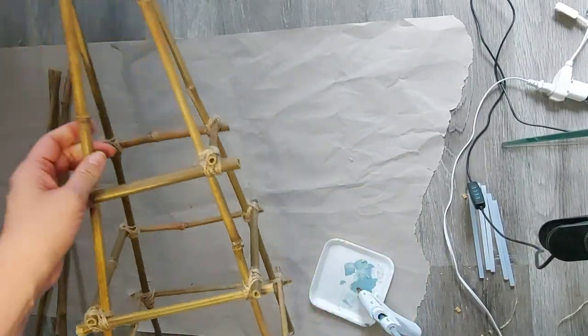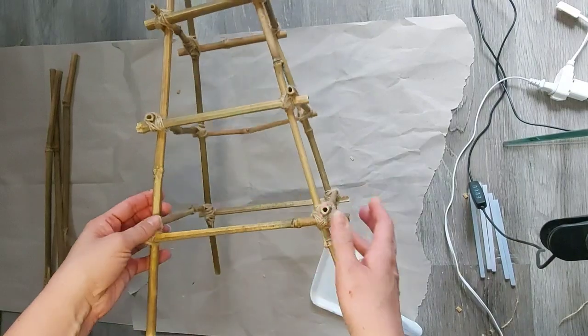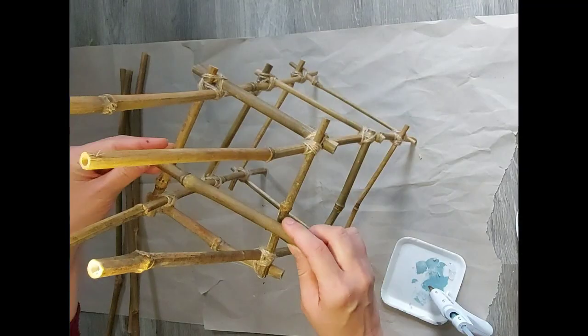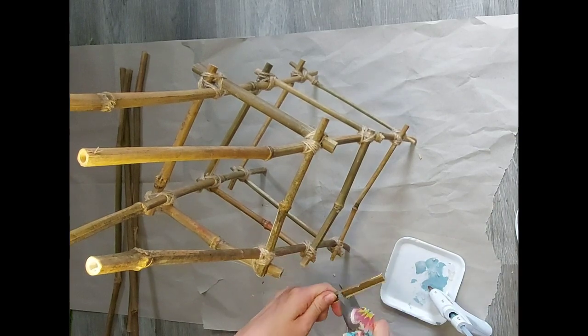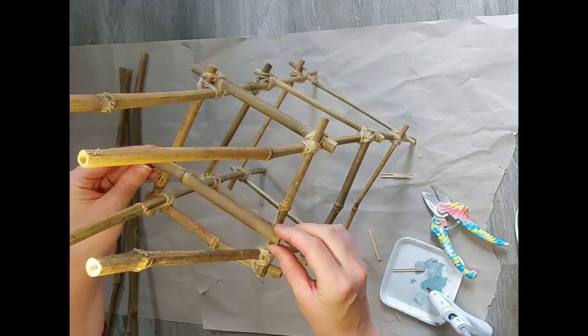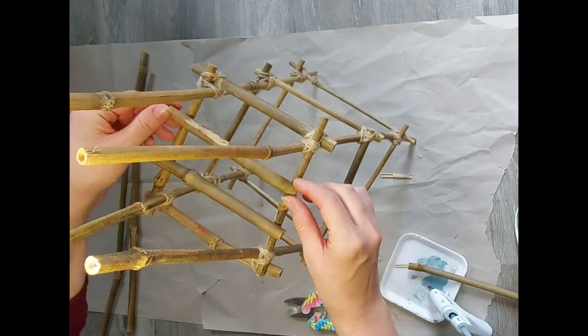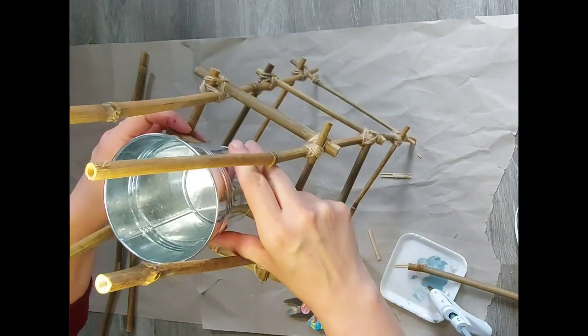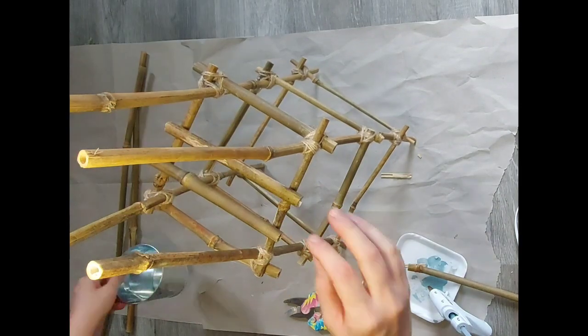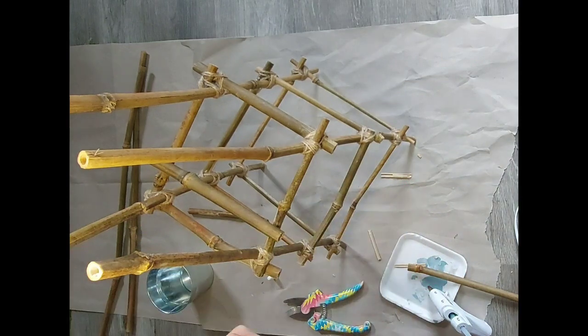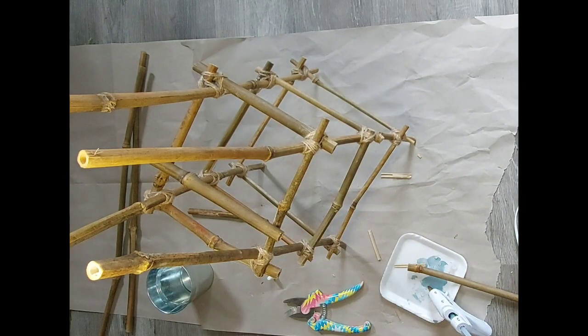Once you have all three levels completed, this is what you're gonna have. The next thing I did was decided that I wanted to add two more bamboo sticks on the top that will hold a pot, a small pot. So I trimmed them down as you see there again with my Fiskars gardening shears. I found they worked the best to cut them. Some were harder to cut than others and some cut like butter.